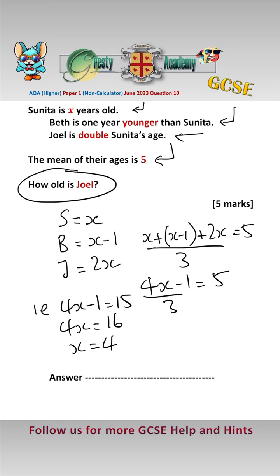But they're not asking for Sunita's age, they're asking for Joel's age. And Joel's age is twice Sunita's age, which is 2x. So 2x is 8, which is the answer. Joel is 8 years old.